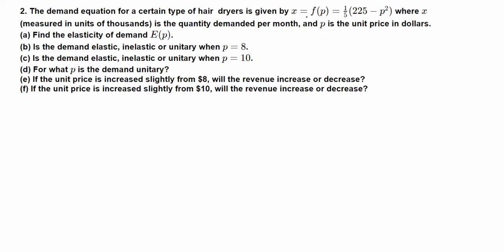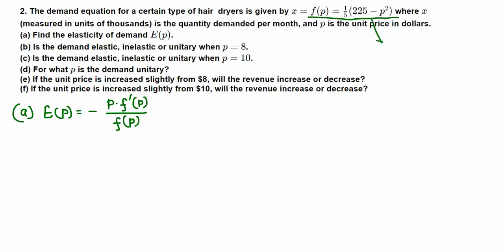The demand equation is given by f(p) = one-fifth times the quantity (225 minus p squared). We need to find the elasticity of demand E(p) for part A. The formula for elasticity of demand is E(p) = negative p times f'(p) divided by f(p), so we need to find the derivative of this function.